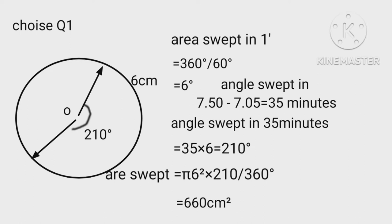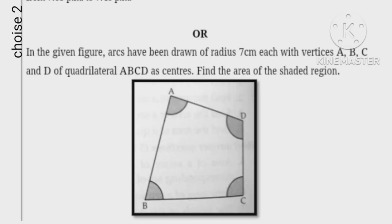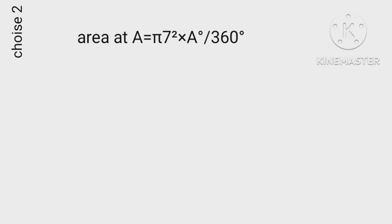The area swept equals 660 square centimeters. For the next part, area swept at A equals pi times 7 squared times angle A upon 360 degrees.